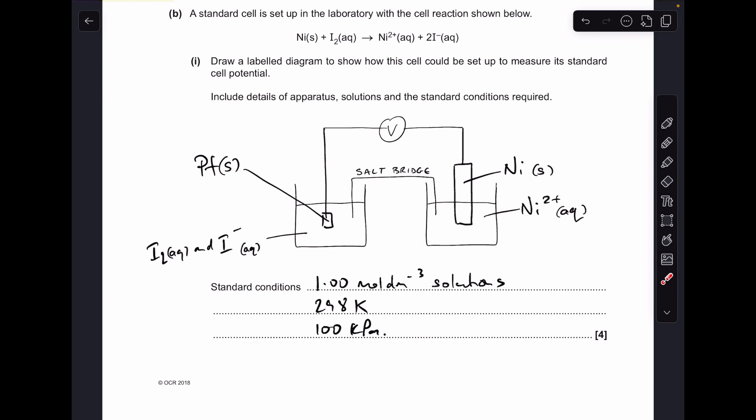Moving on to the cell, you can see I've put the iodine I- on the left-hand side, so we need solutions of those in that beaker. That means we need a platinum electrode dipping into there. Wire going around through a voltmeter to the nickel electrode, dipping into a solution of nickel 2 plus ions, and then a salt bridge dipping into the solutions.